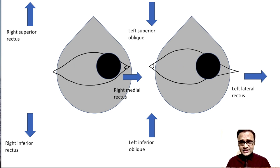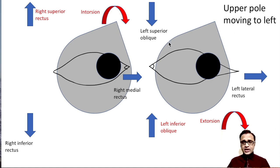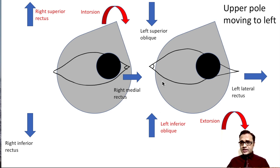When the patient looks in the left gaze, if the upper pole of the eye moves towards the left, there will be intorsion of the right eye and extorsion of the left eye. Now, the right superior rectus in an abducted eye causes elevation, but the same muscle causes intorsion of the right eye in the adducted position. And the left inferior oblique, which caused elevation in the adducted eye, causes extorsion in the abducted eye.